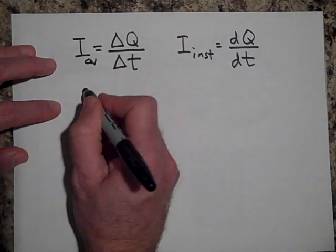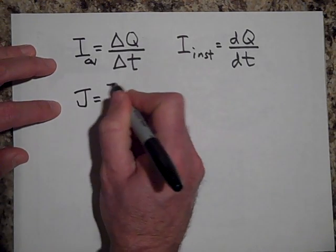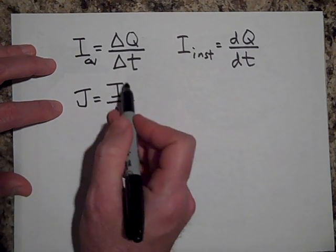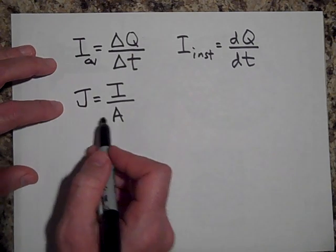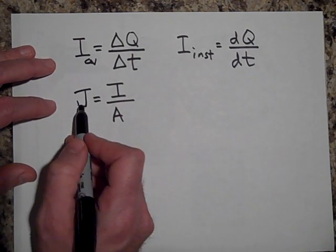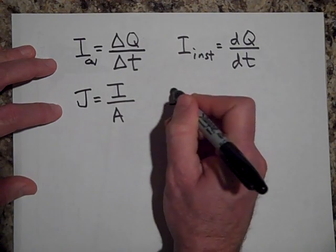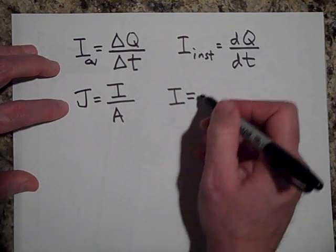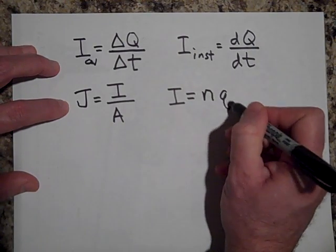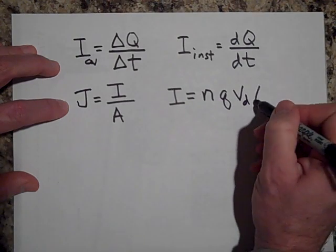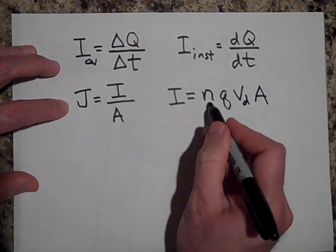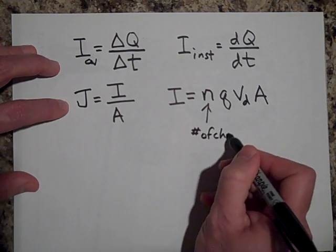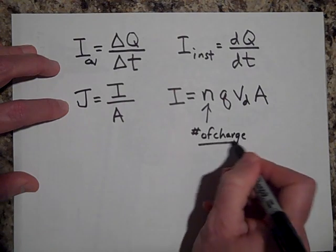Okay, and then from there we also define current density as the amount of charge that passes through a cross-sectional area. So this is the charge passing through a cross-sectional area. This is called current density.